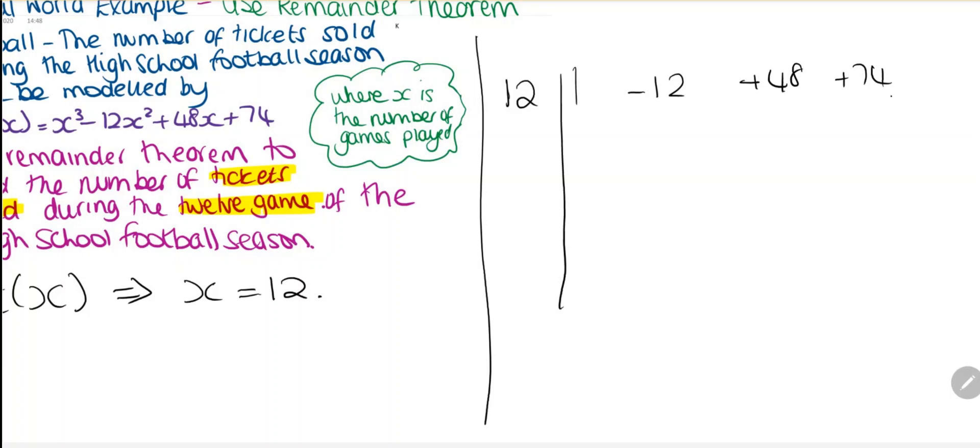So we bring the first number down, which is 1. 1 multiplied by 12 is 12. If we add -12 and +12, we get 0. 0 times 12 is 0. 48 and 0 is 48. 48 multiplied by 12 is 576. And 74 plus 576 is 650.